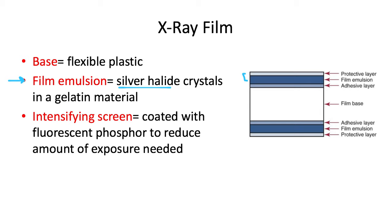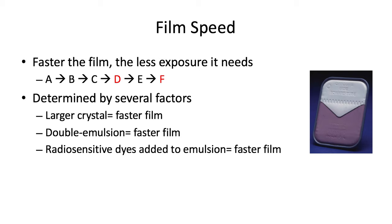Sometimes there's a single emulsion layer, and sometimes, like in this diagram, there is a double emulsion layer with two separate film emulsions. For panoramic and cephalometric films, an intensifying screen is used, coated with fluorescent phosphor that converts x-ray photon energy into light, thereby reducing the amount of exposure needed. However, it also decreases image resolution due to the dispersion of the light from the phosphor.